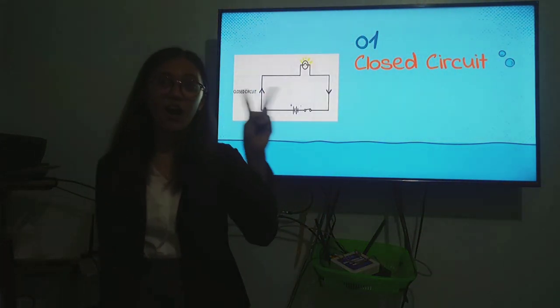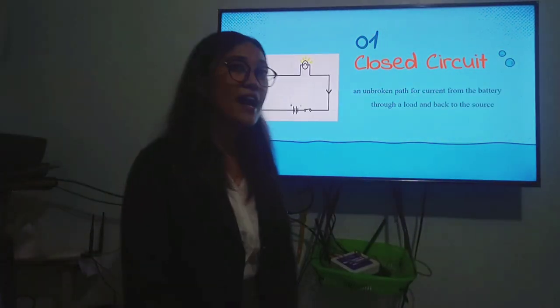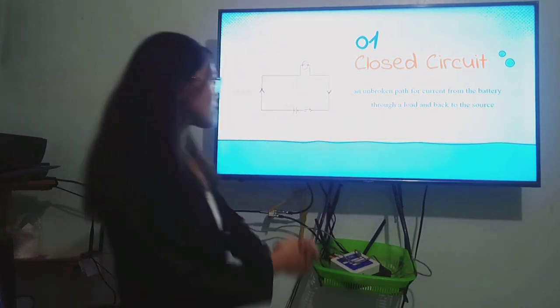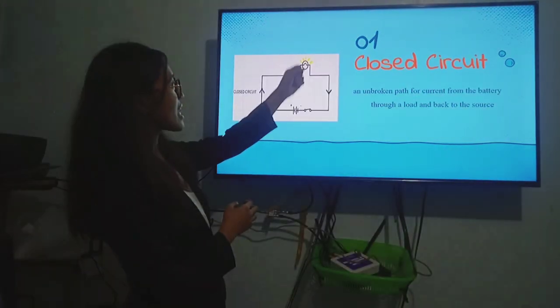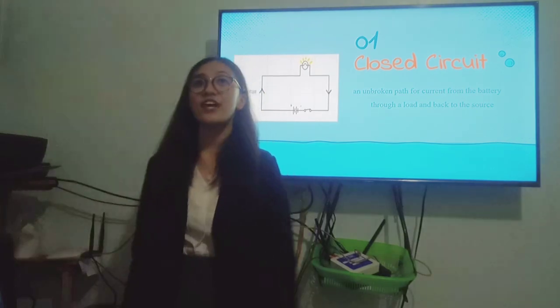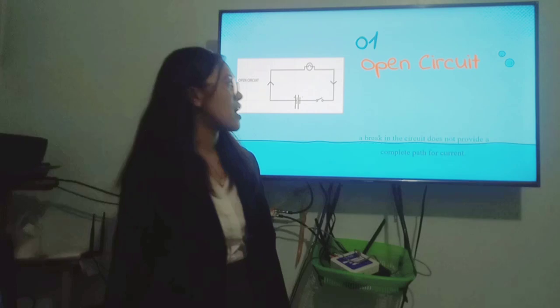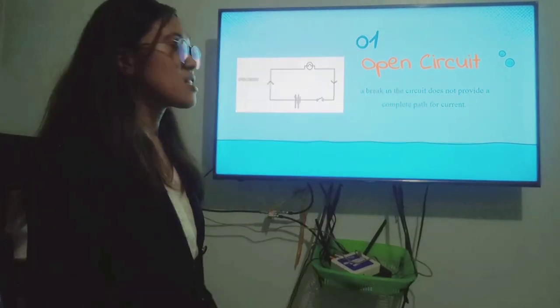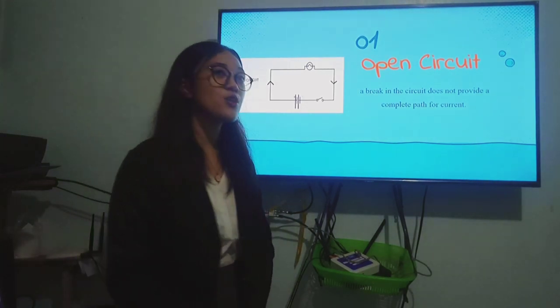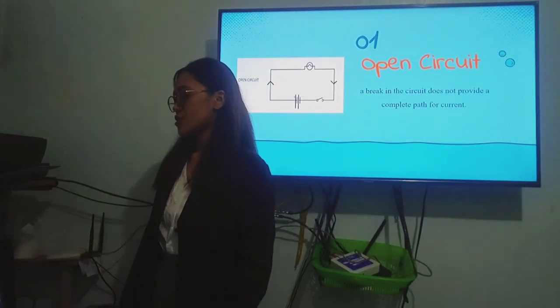First, let us know the two types of circuit. First is a closed circuit. This is an unbroken path of current from the battery through a load and back to the source. As you can see, class, the bulb here is on because our circuit is closed. When a circuit is closed, there is a current flow. Now, next type of circuit is an open circuit. An open circuit, a break in the circuit does not provide a complete path for the current. Which means our load or the bulb is off. Those are the two types. Open circuit and closed circuit.